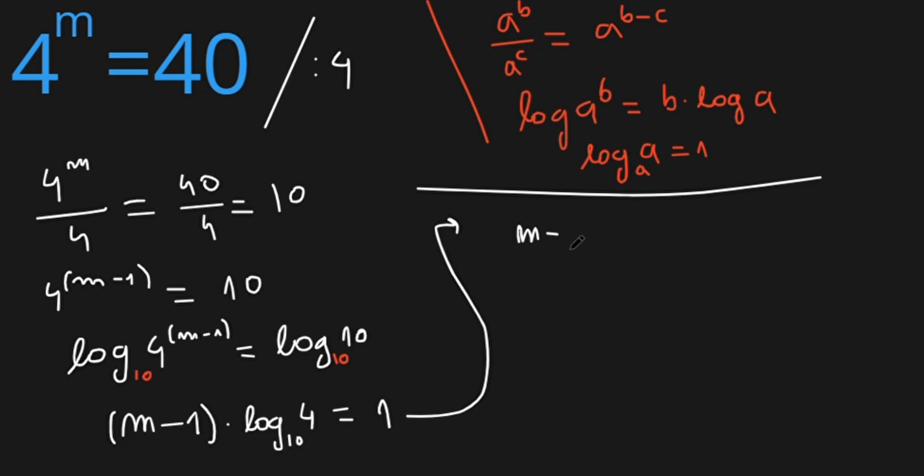Okay, so now we have m minus 1 equals 1 over log of 4 base 10. So m equals 1 over log of 4 base 10 plus 1, and this is our result.